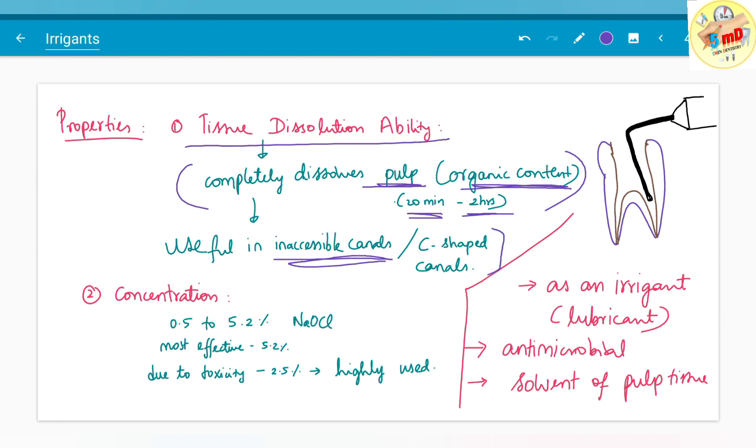The most effective concentration of sodium hypochlorite is 5.2%, but due to the cytotoxic nature, 2.5% is most commonly used. Concentration usually ranges from 0.5% to 5.2%.